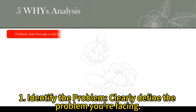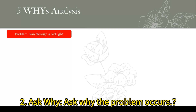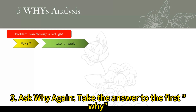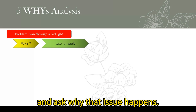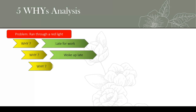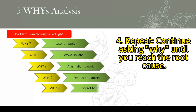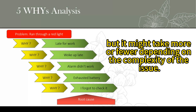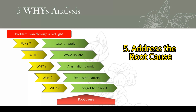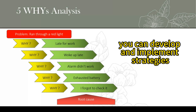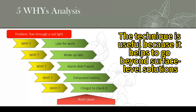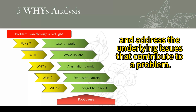Here's how it generally works. First, identify the problem — clearly define the problem you're facing. Then ask why the problem occurs; this leads you to the first level of the cause. Take that answer and ask why again, leading to the second level. Continue repeating until you reach the root cause — it often takes about five iterations, but may take more or fewer depending on complexity. Once you identify the root cause, develop and implement strategies to address it and prevent recurrence.